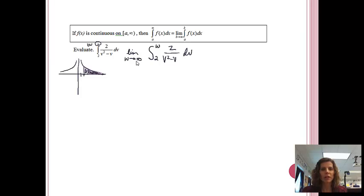We've just turned it into a problem where we can actually evaluate it. So now I have 2 over v squared minus v dv. We're going to ignore the limit until I'm all the way down. I do notice the denominator can factor, which sets me up nicely for a partial fractions problem. So that's exactly what I'm going to do.